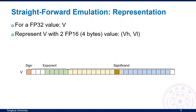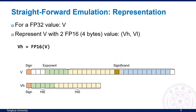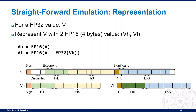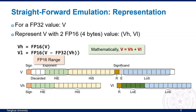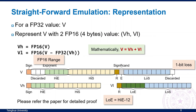Here is a straightforward approach. For an FP32 value V, we can represent V with two FP16 numbers, V_h and V_l, where V equals V_h plus V_l. Because FP16 has only 5 exponent bits, we can only have at most FP16 range. The exponent bits of V_l equal V_h minus 12. V_h and V_l can represent V's first 22 significant bits, which leads to 1-bit precision loss. The detail of the numerical analysis is in our paper.